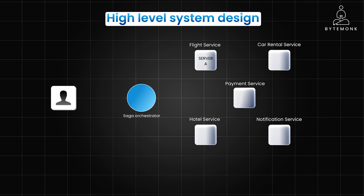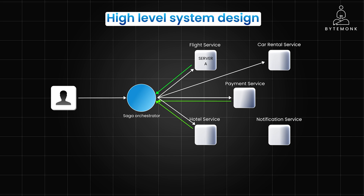Here is the interaction flow. The user initiates a booking request, which is sent to the saga orchestrator. The orchestrator sends a request to the flight service to reserve a seat; the flight service responds with flight reserved or flight reservation failed. If a flight is reserved, the orchestrator sends a request to the payment service to process the payment; the payment service responds with payment successful or payment failed. If payment is successful, the orchestrator sends requests to the hotel service and car rental service, which respond with booked or booking failed. The orchestrator then collects the final outcomes of each step and sends a request to the notification service to send a confirmation email summarizing the successful and failed bookings.